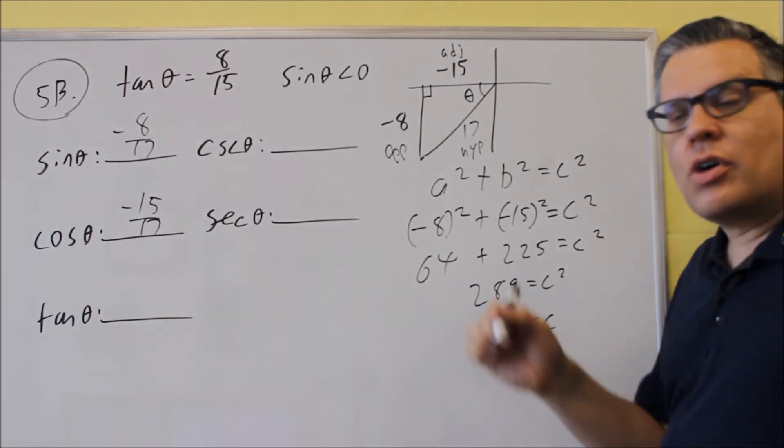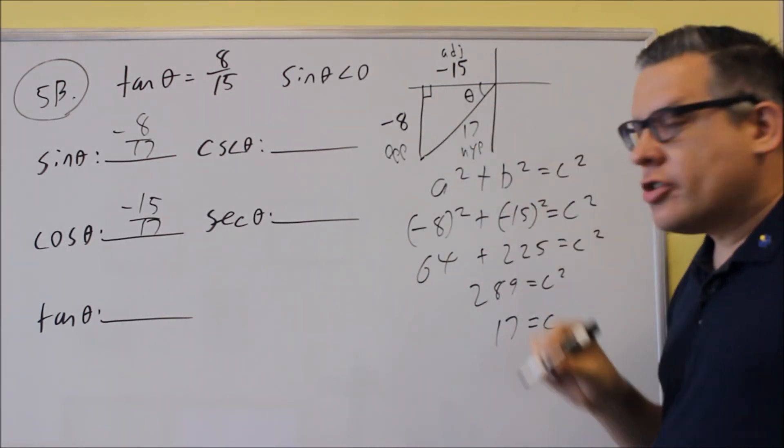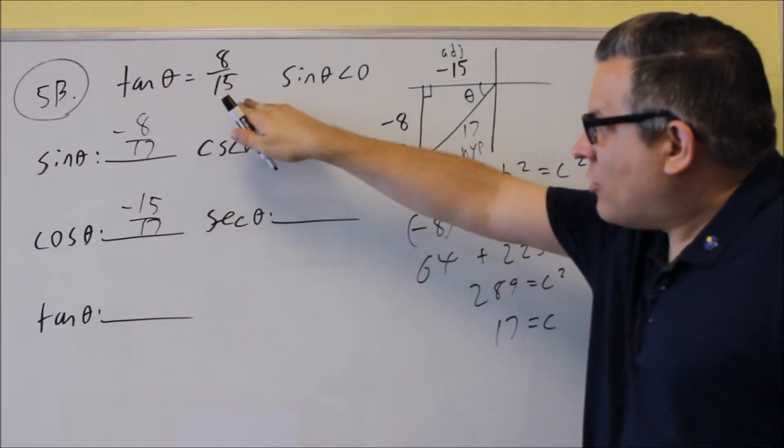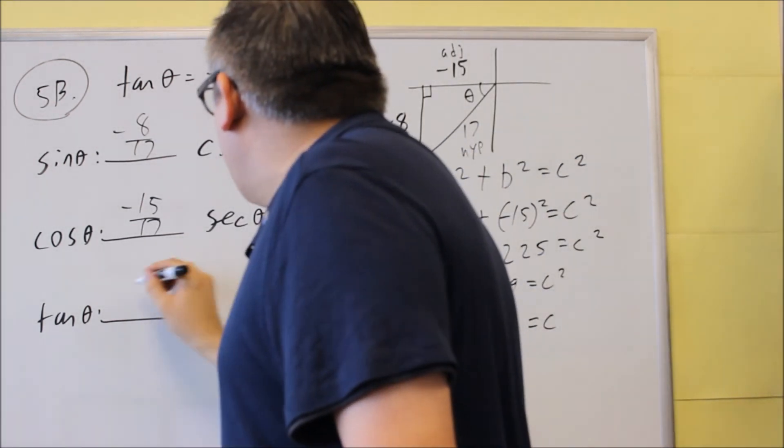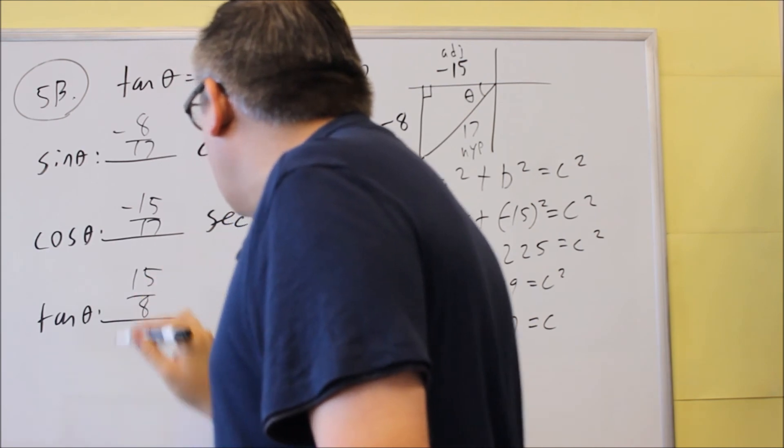Cotangent is equal to adjacent over opposite. That's the same thing as the reciprocal of tangent. So we'll just use the reciprocal of that one. And that's going to be 15 over 8.